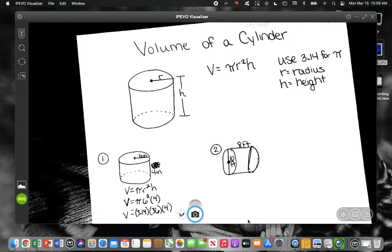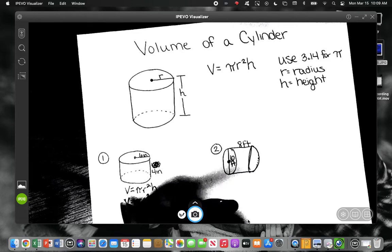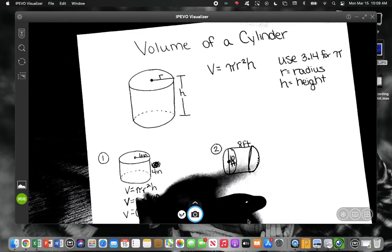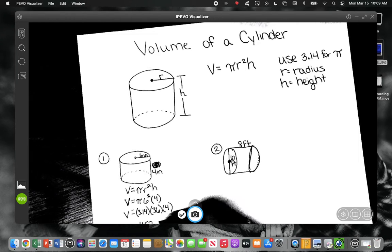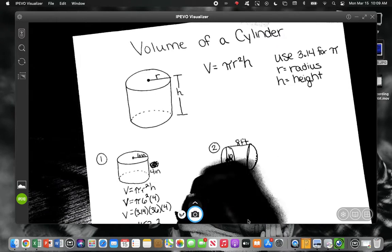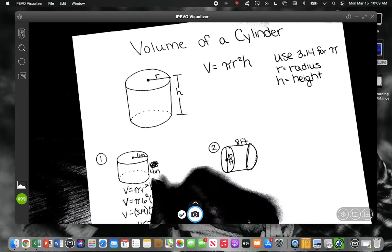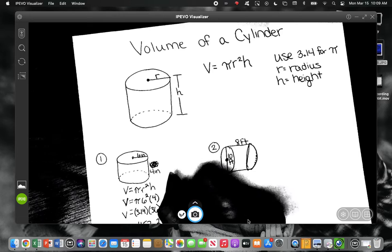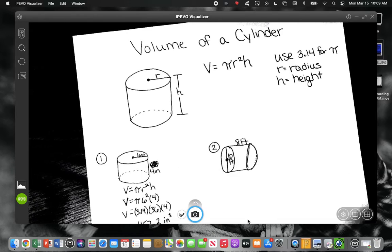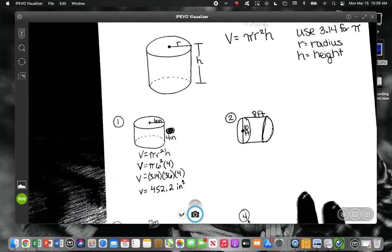Alright, so what did we get? 452.16. Okay. We're going to round 452, and then what are we going to round that to? 452.2. And what is this? We're doing volume. It's inches, but it's what? Cubed, right? We need to have that. We need to label it. We need to have our inches cubed.